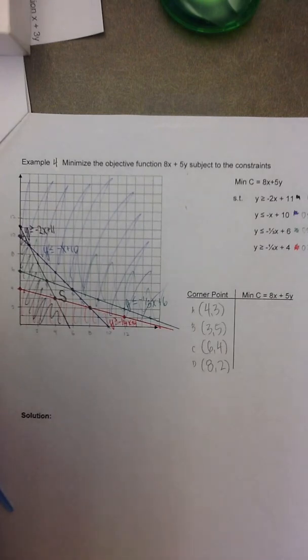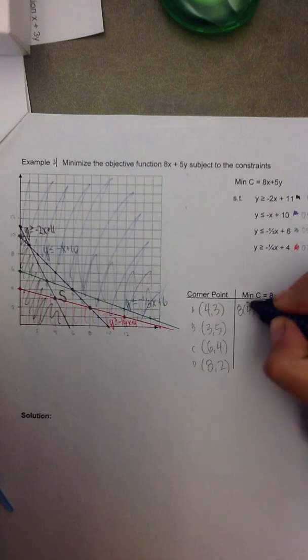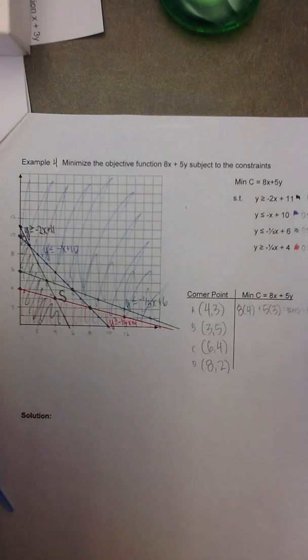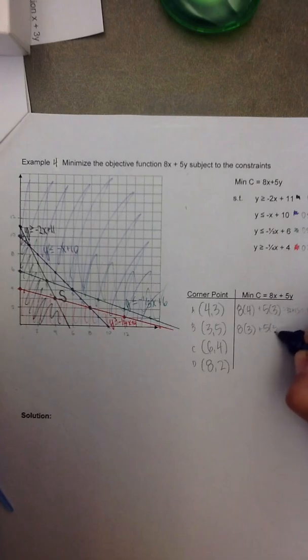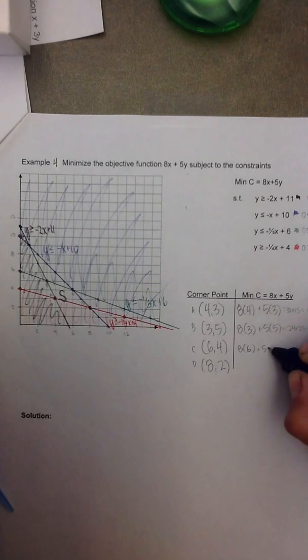So once I have all the corner points or vertices that define the feasible set S, I need to plug those into the objective function to find which gives me the optimal value. So 8 times 4 plus 5 times 3, that's 32 and 15, which is 47. 8 times 3 plus 5 times 5, that's 24 and 25, which is 49. 8 times 6 plus 5 times 4, that's 48 plus 20, or 68.